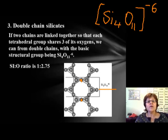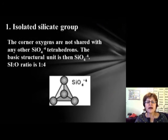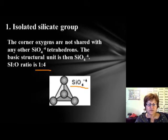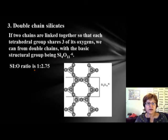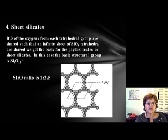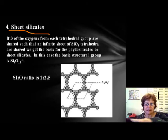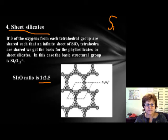Notice the silicon-to-oxygen ratios decreasing across structures: isolated silicate is 1:4; chain (inosilicate) is 1:3 (two Si, six O); double chain is 1:2.75 (eleven divided by four). For sheet silicates, tetrahedrons are shared in a whole plane, giving a ratio of 1:2.5 and formula Si₄O₁₀.